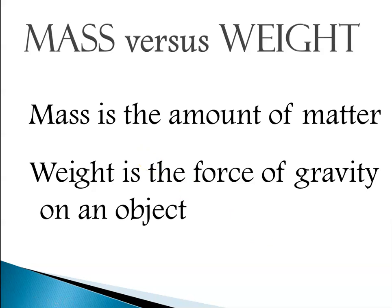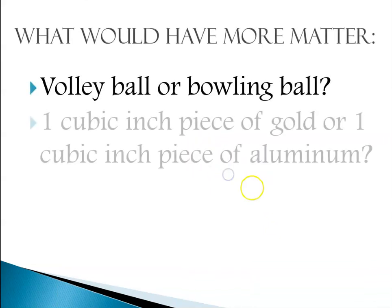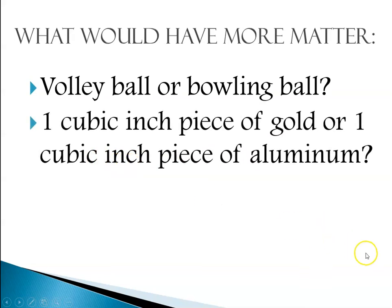So what would have more matter, my volleyball or my bowling ball? What would have more matter, a cubic inch of gold or a cubic inch piece of aluminum? The answer here would be the bowling ball has more matter than the volleyball because the volleyball is filled with air and air is less dense. My aluminum has less matter than my gold because aluminum is less dense than gold. The more dense a substance is, the more matter it contains.